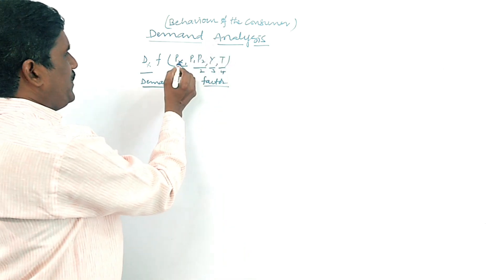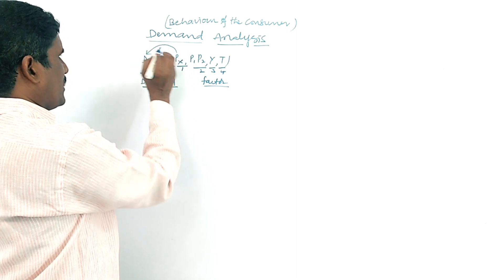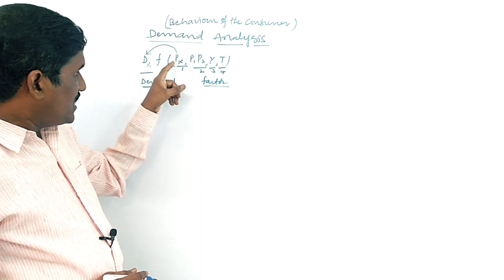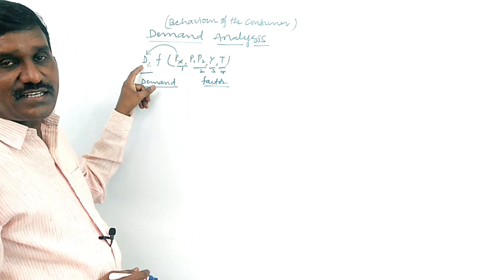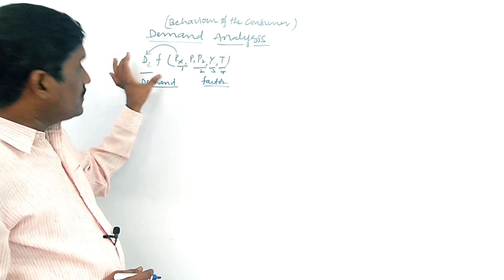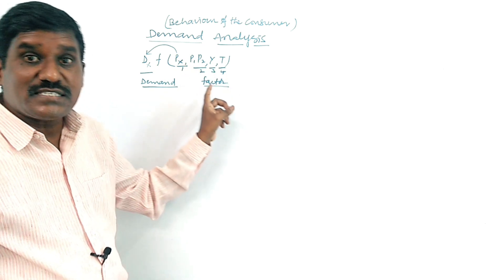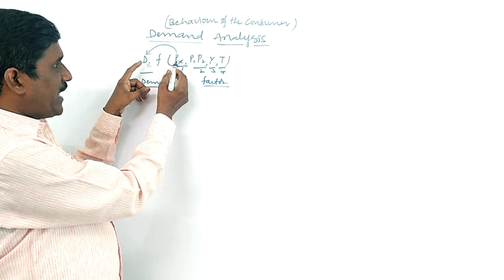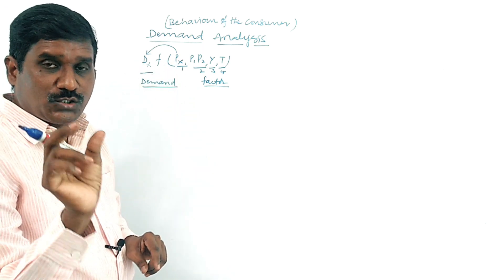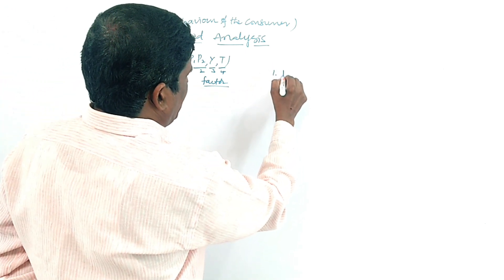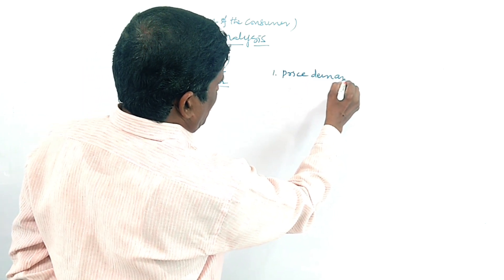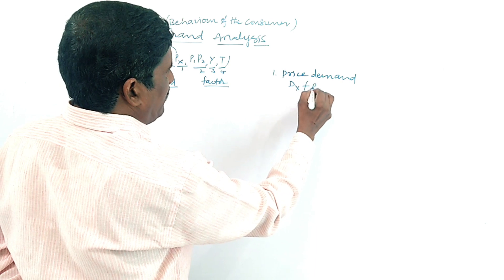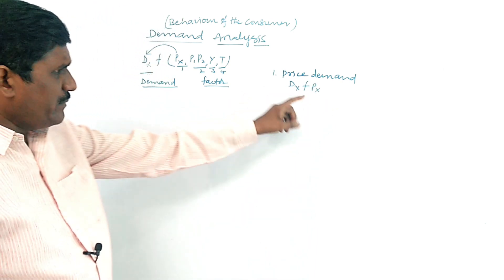Suppose px — if any changes in px, is there any change in demand? Yes, definitely. There is a change in px, compulsory there is a change in demand. When is it applicable? When the remaining factors keep constant. We are discussing only between two factors: price and demand. dx is a function of px.